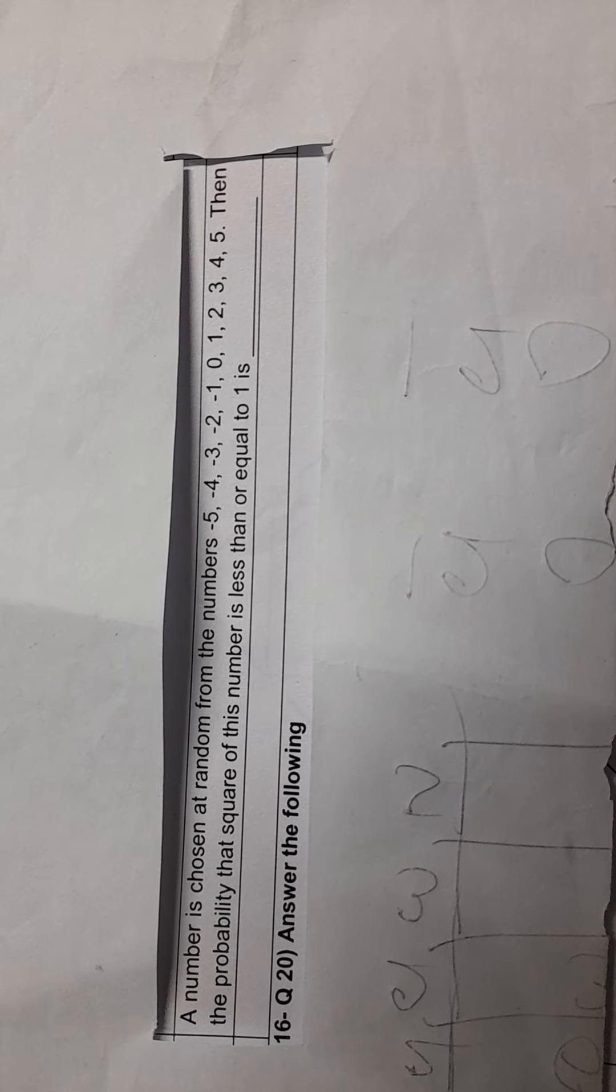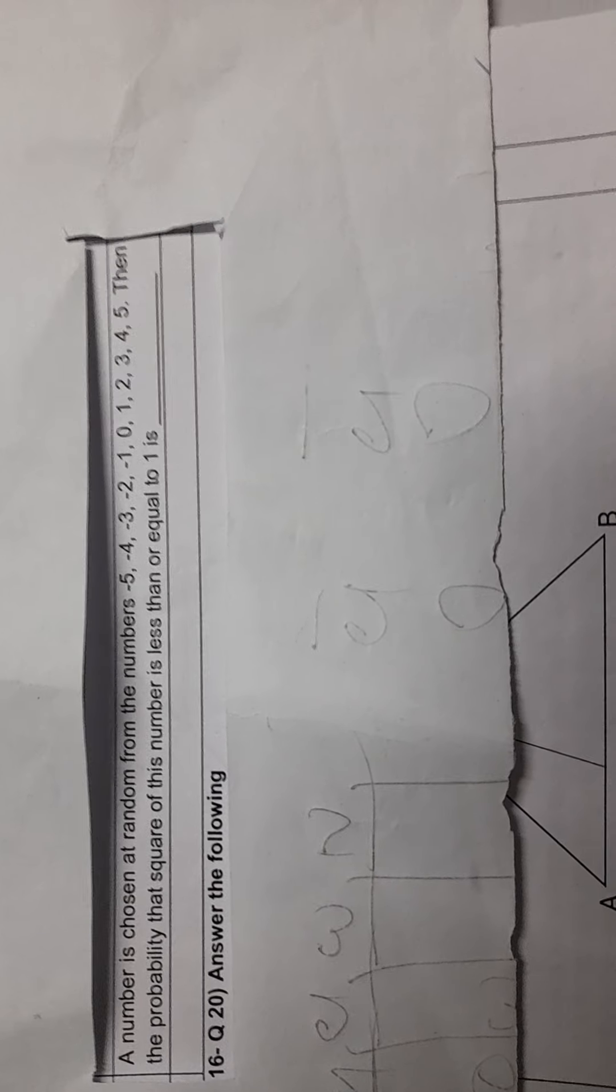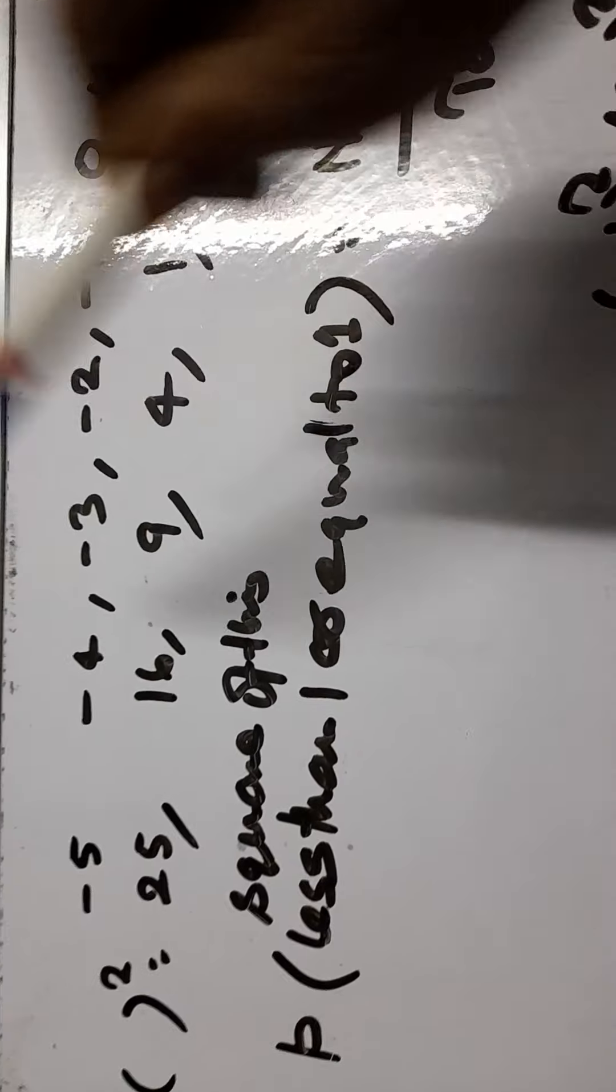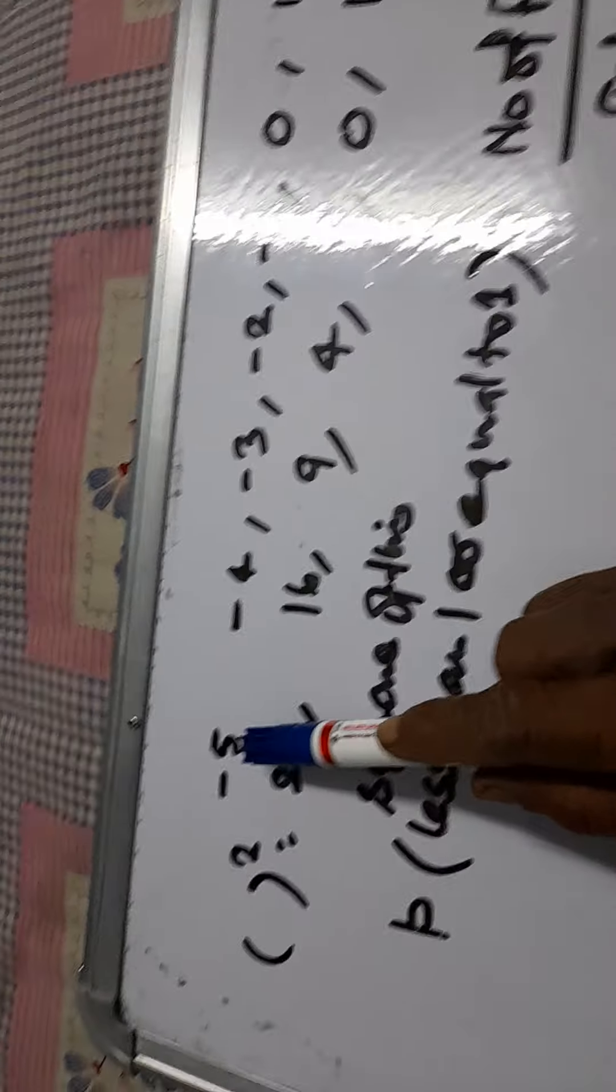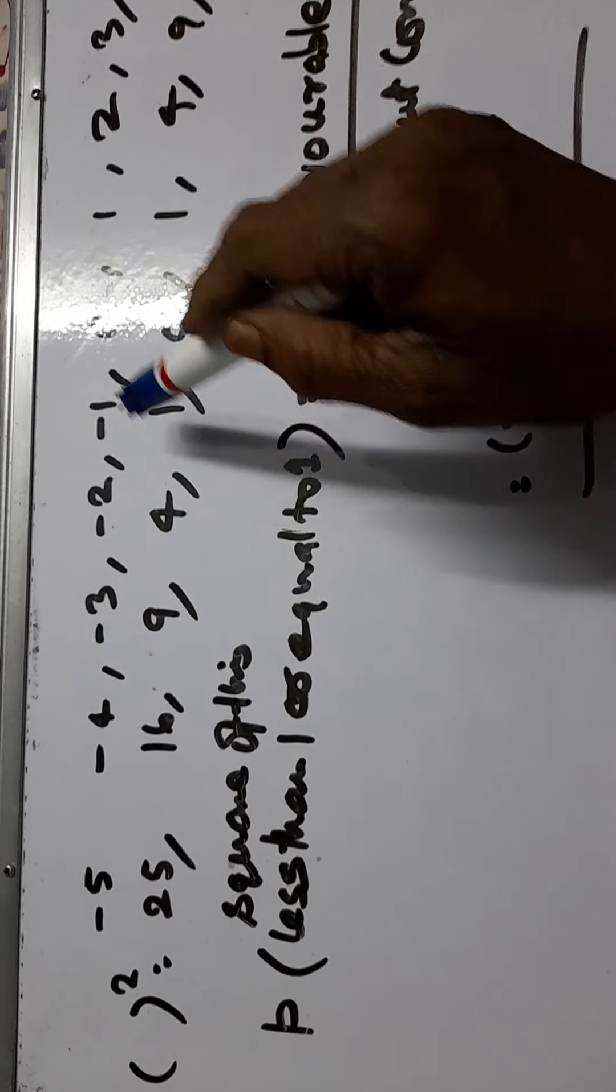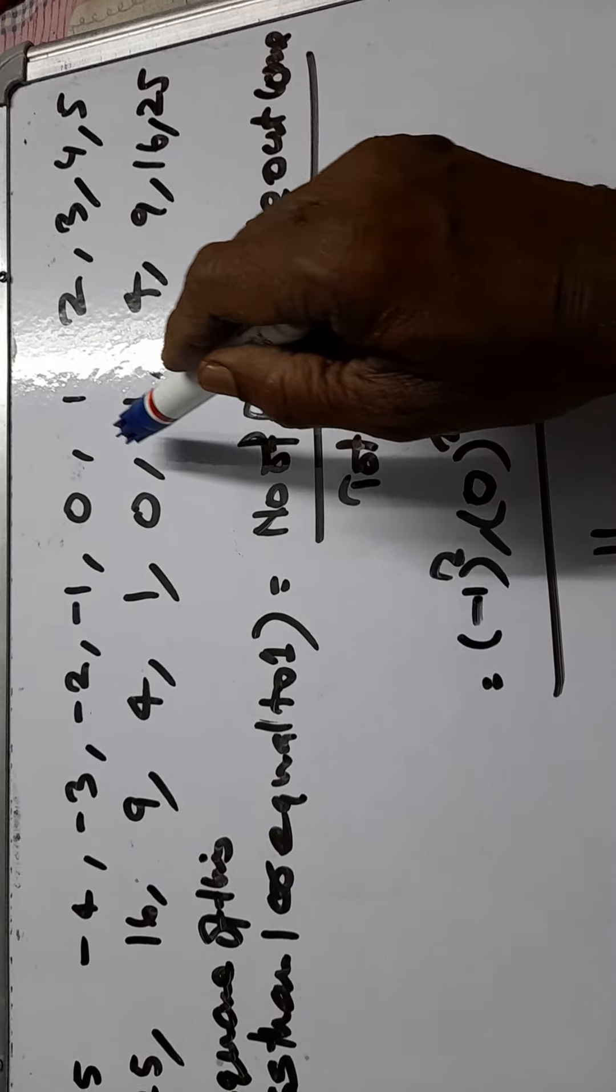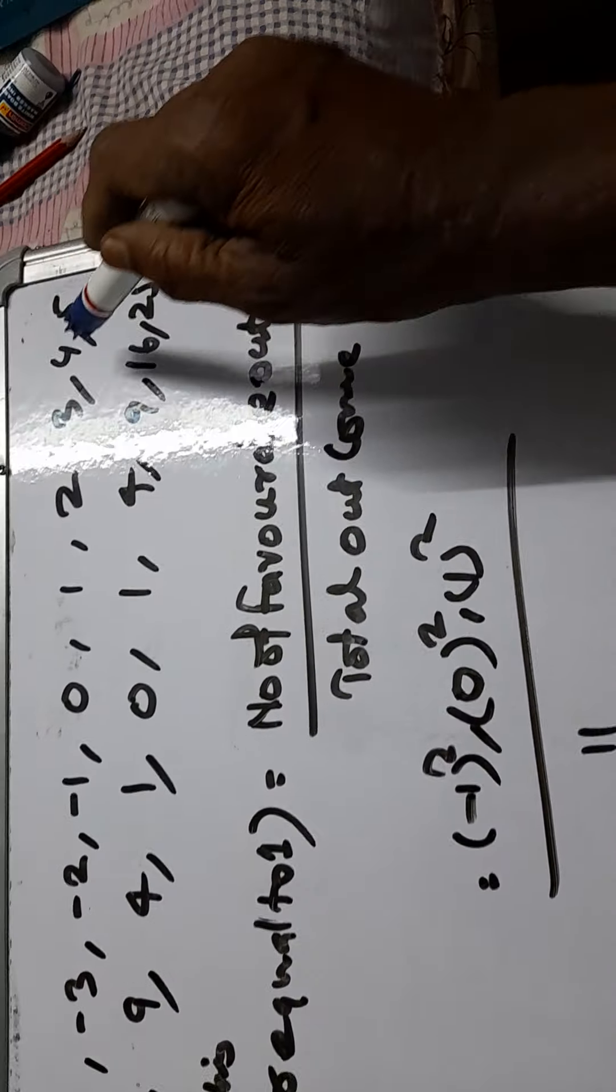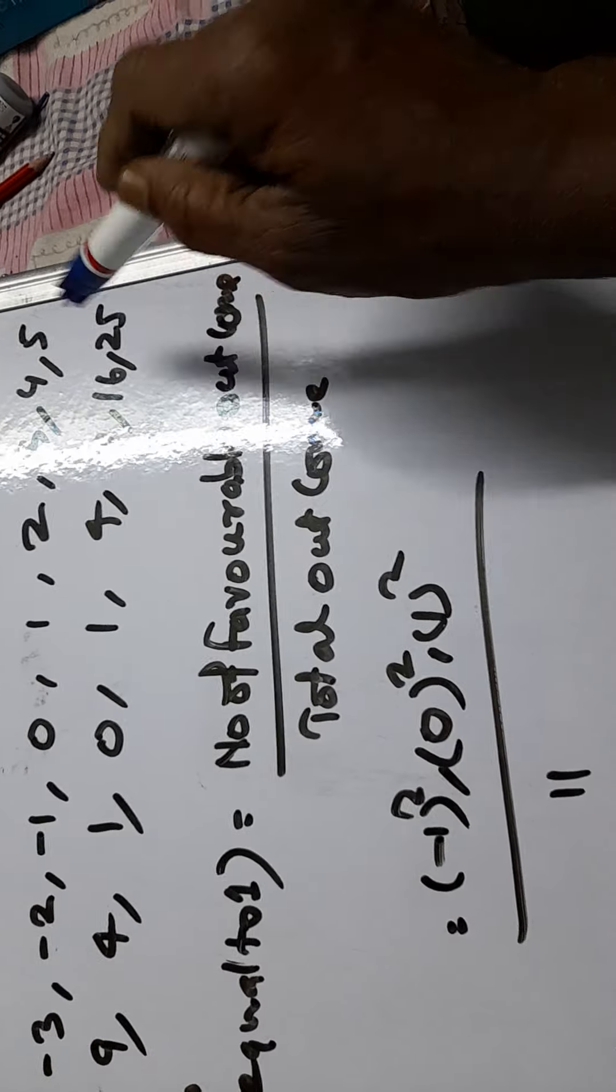You have read the question and now we come to solution. If we make the list of the numbers and the squares, the square of minus 5 will be 25, minus 4 will be 16, minus 3 will be 9, minus 2 will be 4, minus 1 will be 1, 0 will be 0, 1 will be 1, square of 2 will be 4, square of 3 will be 9 and square of 4 will be 16 and square of 5 will be 25.